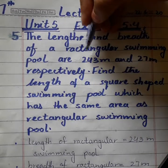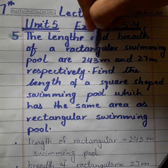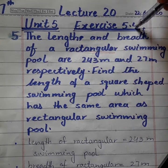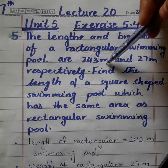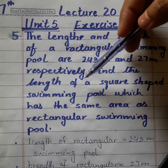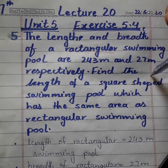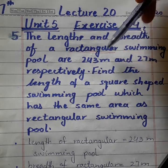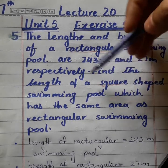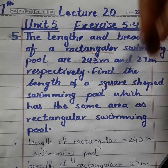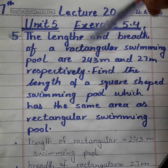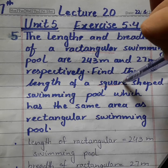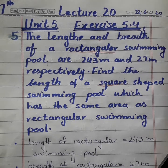Yahan par rectangular swimming pool ki baat hui hai. Uski length aur breadth humein given hai. Ab woh keh rahe hain: find the length of a square shaped swimming pool. Given hai humein rectangular ki, find karni hai square ki. Aur condition di hai ke jo area rectangular ka hai woh equal hai square ke area ke swimming pool ke.